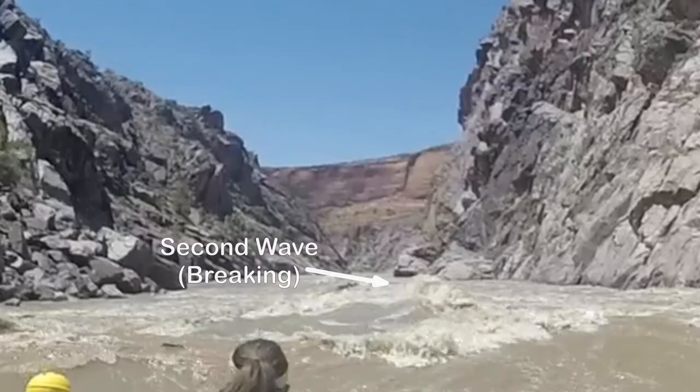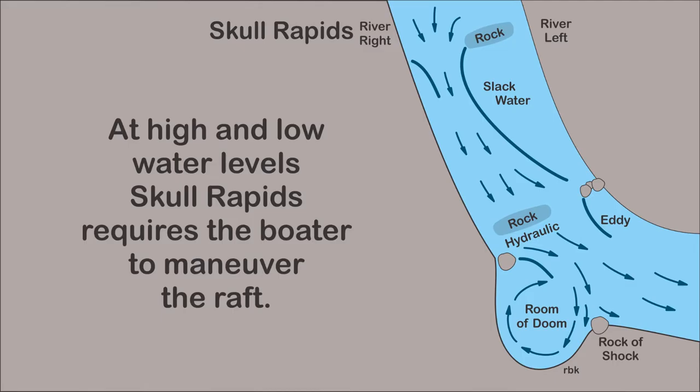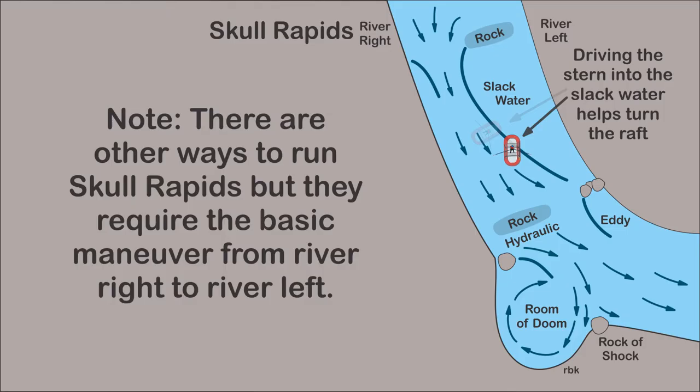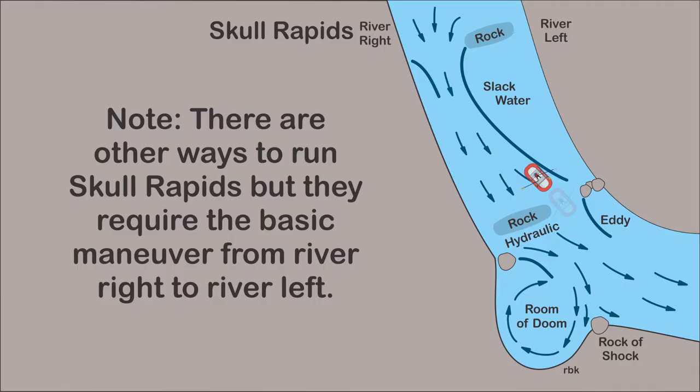The second wave breaks on itself. Skull Rapids requires a series of moves at both high and low water levels. The drop at the top of the rapids pushes boats to river right and into a large hydraulic, requiring the boater to actively move toward river left. The boater may drive the stern and stick it into the slack water created by the top hole on river left, slowing the raft and helping to turn it, walking the raft past the large hole on river right.